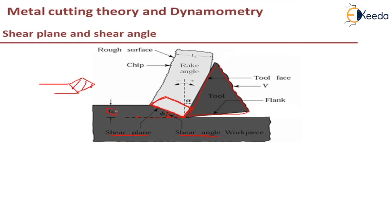T-naught is the uncut chip thickness, and T-c is the chip thickness. Alpha is the rake angle. If you see the nomenclature of the cutting tool, this is the rake angle. If the cutting tool shape is like this, it is called a positive rake angle, and if the cutting tool shape is like this, it is called a negative rake angle. There are advantages to a positive rake angle, which you can see in the nomenclature of cutting tools.